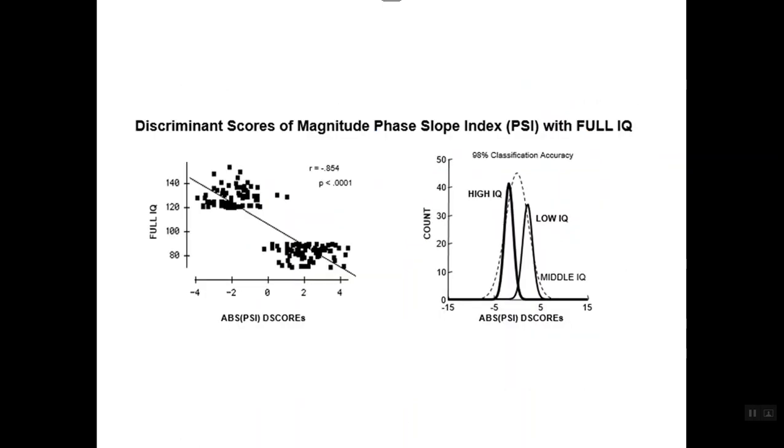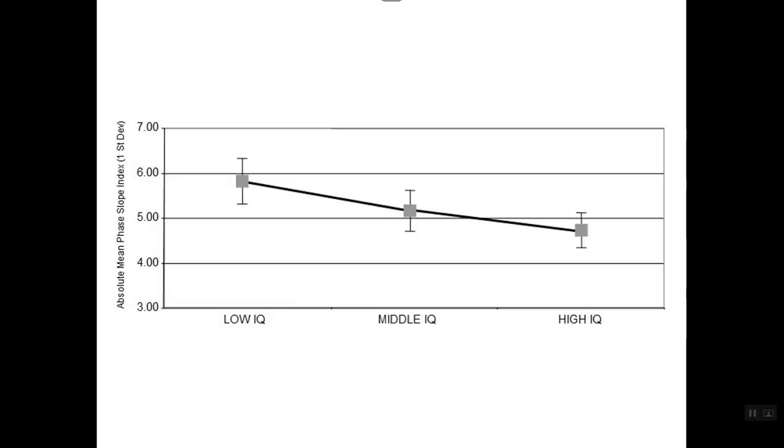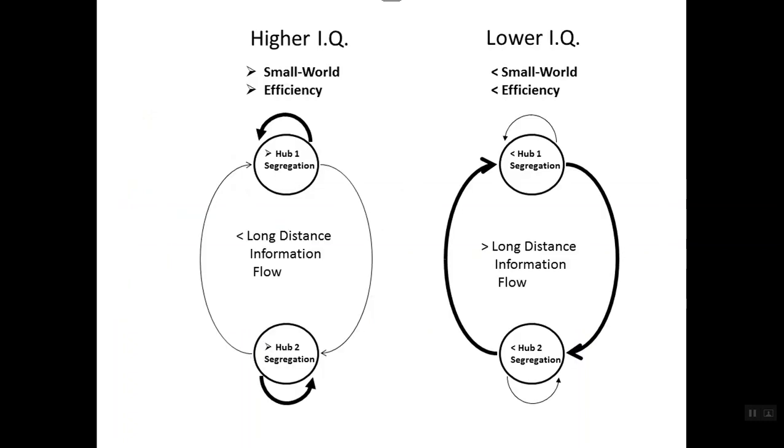What we found is that we could discriminate high IQ from, these were 120 IQ versus 90 IQ, 80 IQ subjects. We have a large database. I think there's about 100, 200 subjects in the study. We could discriminate high and low IQ at 98% classification accuracy. They cross validated it with intermediate IQ people. So you got low, middle and high. If you look at the phase slope index, which is the information flow over long distances, you see that the lower IQ subjects have more information flow over long distances than the high IQ subjects.